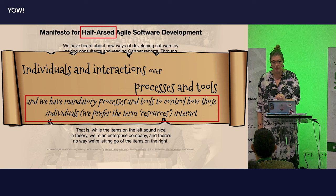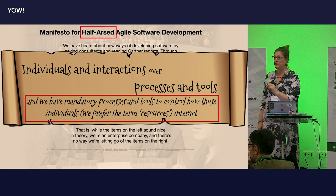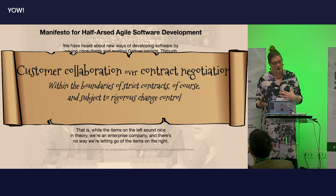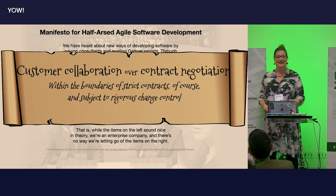They want to be sure that people are actually doing something. The project managers are asking the Scrum Masters how many hours have you spent, and if they've spent a lot of hours, that's a good thing — it means they're doing a lot. I don't want to talk about Twitter here, but sometimes measuring things in the wrong way can cause problems. And also customer collaboration over contract negotiation — within the boundaries of strict contracts, of course, and subject to rigorous change control.